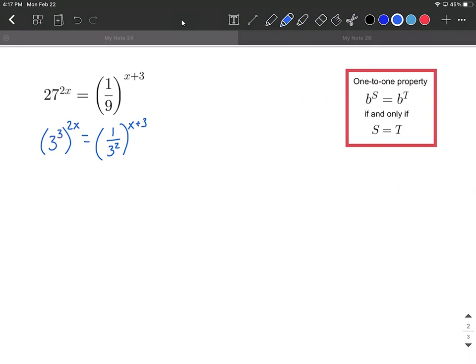First, I would rewrite them so you can see the same base. Now we're not quite to the point where we can drop our bases because it's not just three to a power on each side. We can combine our exponents together on the left-hand side by using multiplication. So three times 2x makes 6x.